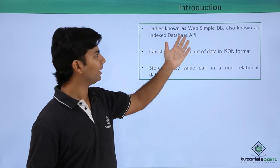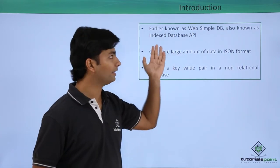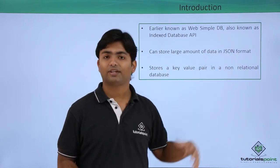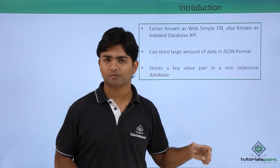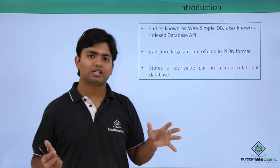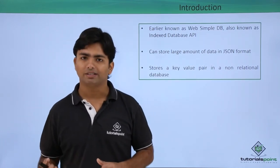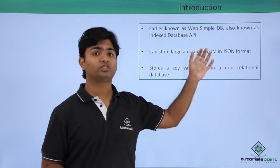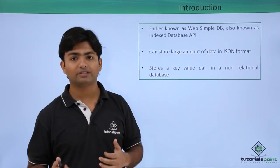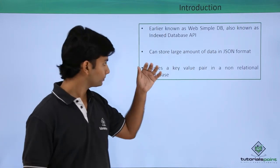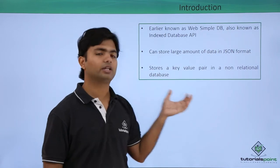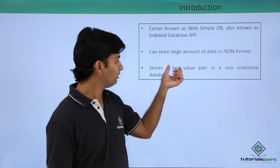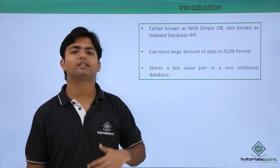IndexedDB was earlier known as Web Simple DB and is also called the Index Database API. This API helps us store large amounts of data in JSON format. Nowadays, whenever you work with any JavaScript-related technology — Node, Angular, React — JSON is a very popular format because it offers better performance and easier implementation. It stores data as key-value pairs in a non-relational database, where each value has a unique key.